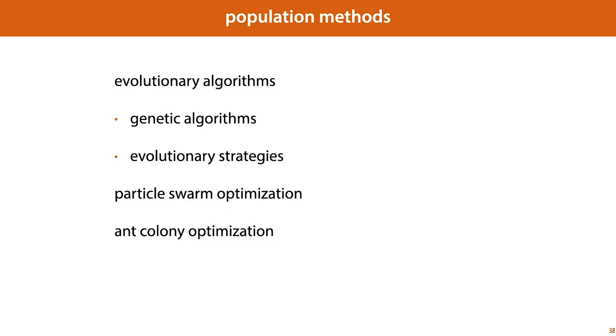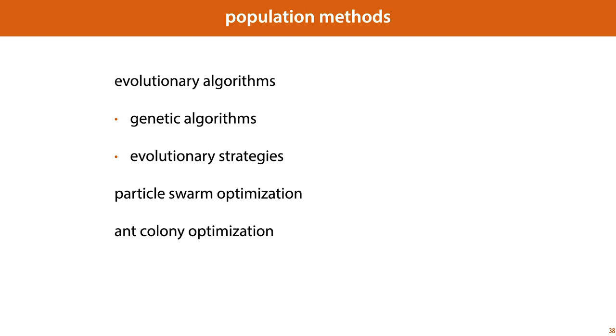There are a lot of ways to do this, and most of them are inspired by natural processes. We won't go into this very deeply, but we will look very briefly at the basic principle behind evolutionary algorithms. Like the parallel search, we start with a population of K models who start searching in parallel. We enter a loop. We rank the population of all models by their loss. These are initially randomly chosen. We remove the half with the worst loss, and then we breed a new population of K models by combining aspects of two randomly chosen parents in the previous population. Here's what that looks like.